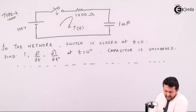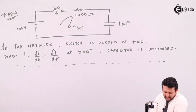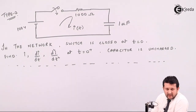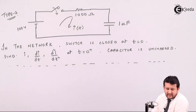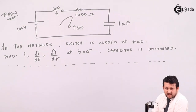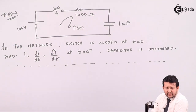Let's start with transient analysis Type 2. In this case you have a combination of resistance and capacitor, whereas in the earlier case you had a combination of resistance and inductor. Let's see what is the difference between Type 1 and Type 2.